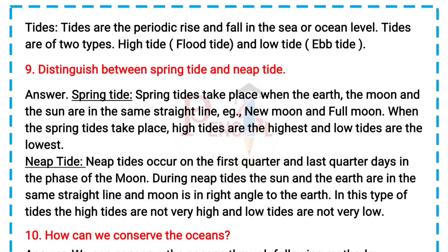Answer — Spring tide: Spring tides take place when the earth, the moon, and the sun are in the same straight line, e.g. new moon and full moon. When spring tides take place, high tides are the highest and low tides are the lowest.